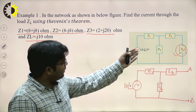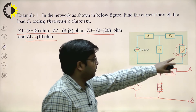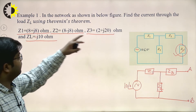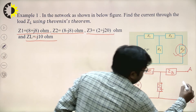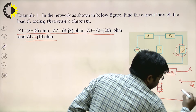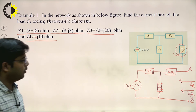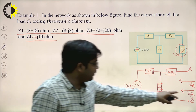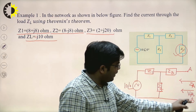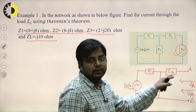When converting this circuit to the Thevenin's equivalent model, first remove Z_L — the element through which you have to calculate the current. Then find Z_TH and V_TH across terminal AB. Since terminal A and B are open circuit, no current will flow through impedance Z3, so the voltage drop across Z3 will be zero.